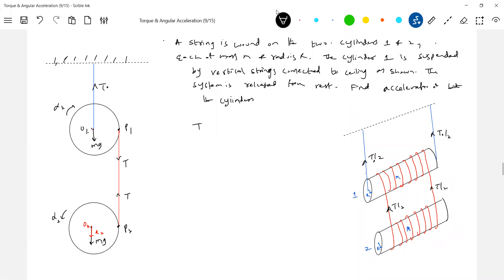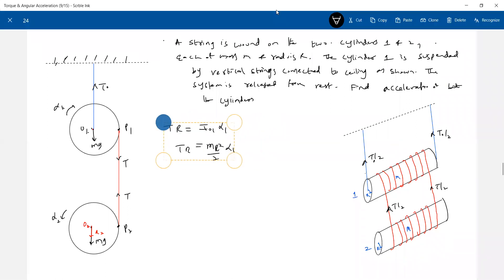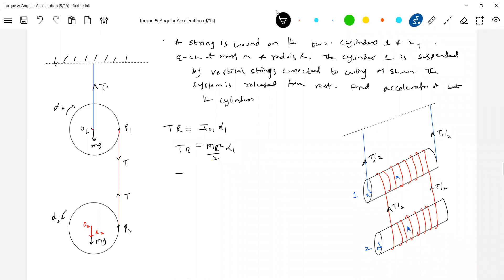Let's write all possible equations. First, T minus T into r should be equal to IO1·α1. And what is IO1? mr²/2·α1. So what is T equal to? The tension in the string is equal to mr·α1/2.